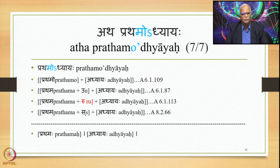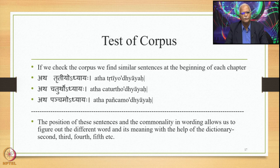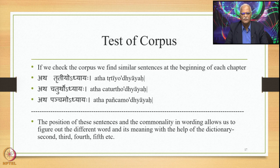This is how we split Atha Prathamodhyayah. We also check the corpus and find similar sentences at the beginning of each chapter — like Atha Trithiyodhyayah, Atha Chaturthodhyayah, Atha Panchamodhyayah and so on. The position of these sentences and their commonality in wording allows us to figure out the different word in each sentence and its meaning from the dictionary — Trithiya means third, Chaturtha means fourth, Panchama means fifth, etc.